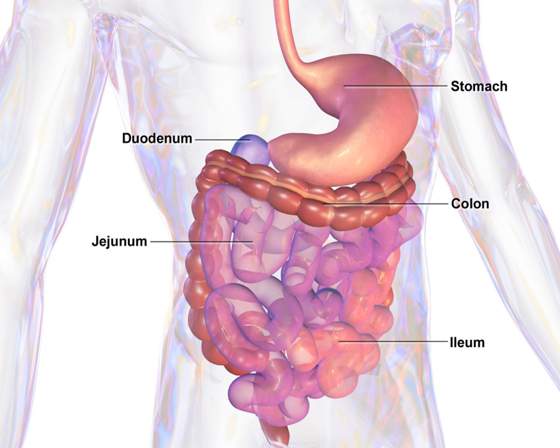The tract may also be divided into foregut, midgut, and hindgut, reflecting the embryological origin of each segment. The whole human GI tract is about 9 meters long at autopsy. It is considerably shorter in the living body because the intestines, which are tubes of smooth muscle tissue, maintain constant muscle tone in a halfway tense state but can relax in spots to allow for local distention and peristalsis. The gastrointestinal tract contains trillions of microbes, with some 4,000 different strains of bacteria having diverse roles in maintenance of immune health and metabolism.